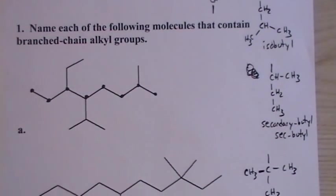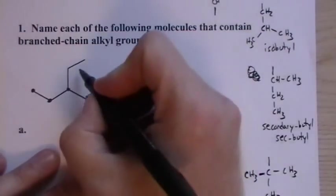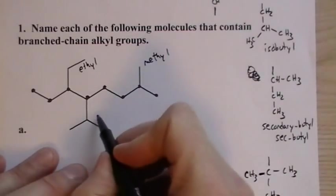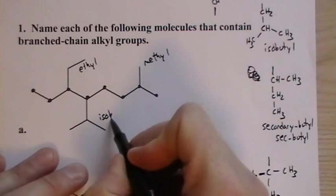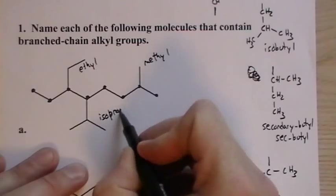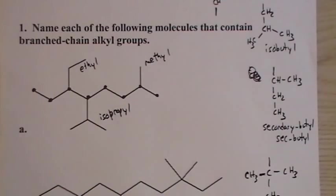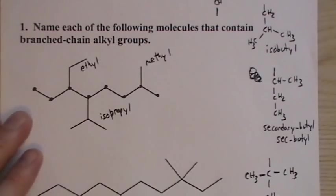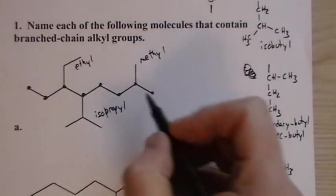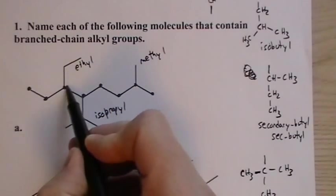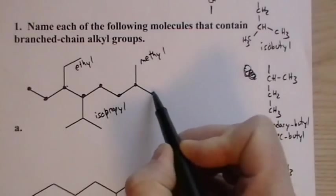If we go with the longest chain, we have an ethyl group here, we have a methyl group, and then if you know your branch chains, you know this is the isopropyl group that I just drew. There are four that you need to worry about; there's a lot more than that, but those are the ones we're going to worry about.